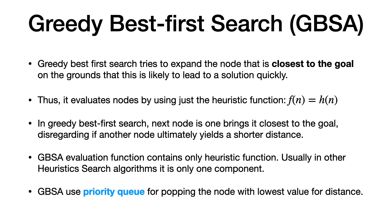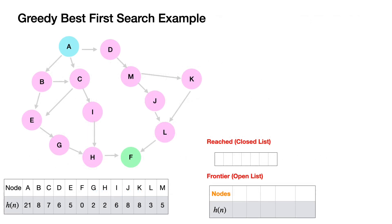GBFS uses a priority queue because we need to pop the node with the lowest cost. Let's look at an example to see how the algorithm works. We have a directed graph where A is the initial node and F is the goal node. The heuristic function values are given at the bottom. Our job is to apply the greedy best first search algorithm and try to reach node F. As you can see, there are multiple ways to reach node F, and we need to find the best path.